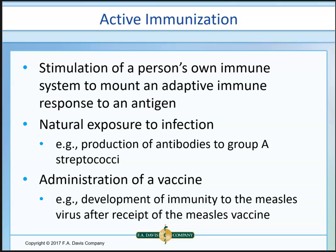The second way is administration of a vaccination. You can develop immunity through a vaccine given for a particular pathogen — using the measles virus as an example. The virus itself is either deactivated or attenuated, and you develop immunity from that. That's active administration of a vaccine.